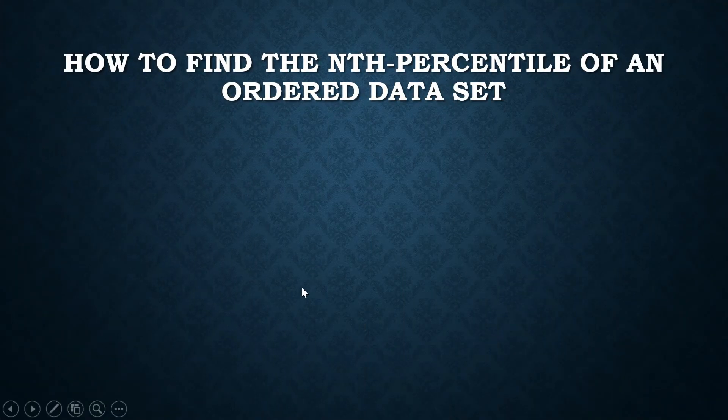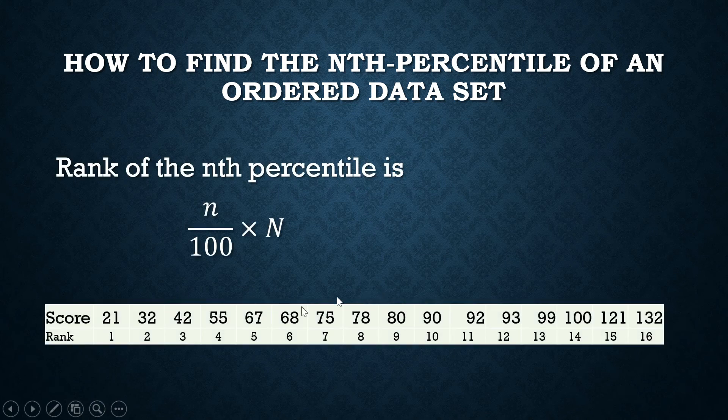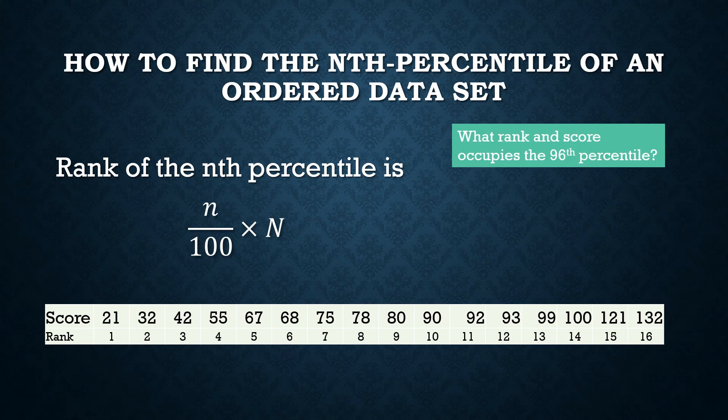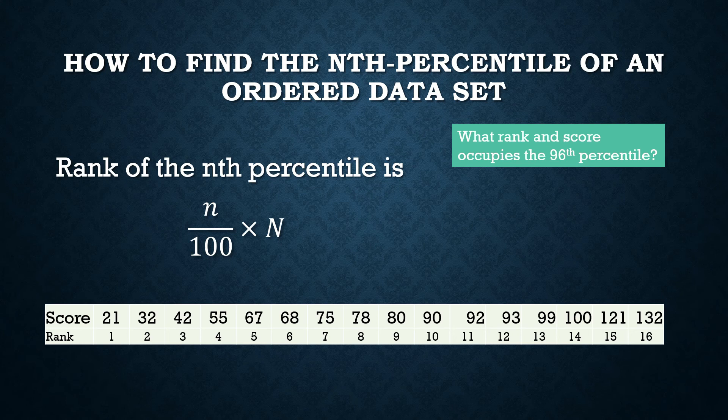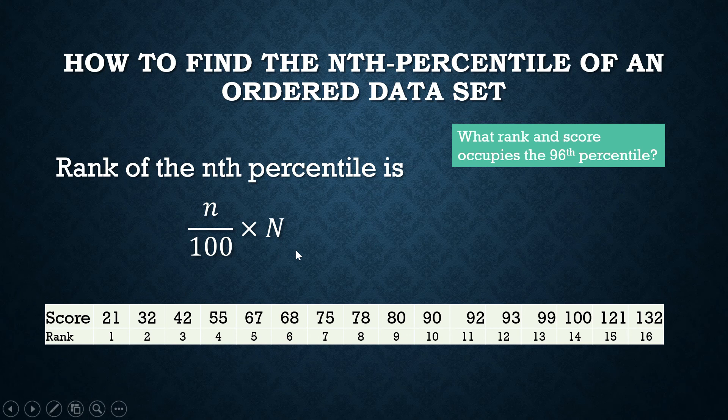How to find the Nth percentile of an ordered data set? Let's say, for example, we are given this ordered data. Those are the scores and these are the ranks. What is the 96th percentile? We do this: N divided by 100 times capital N. Small n is the percentile score divided by 100 times the size of the population.